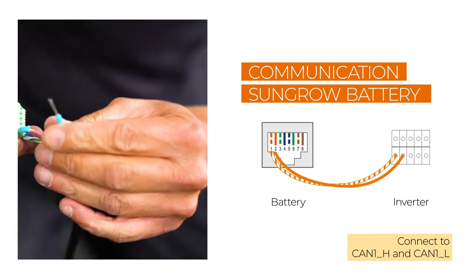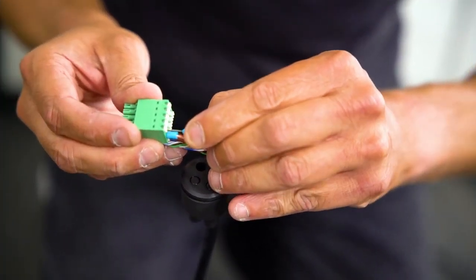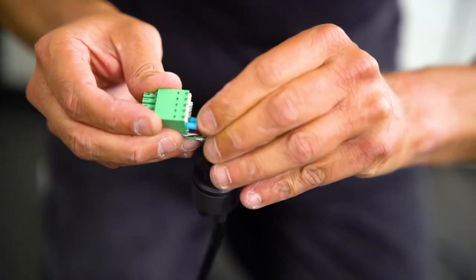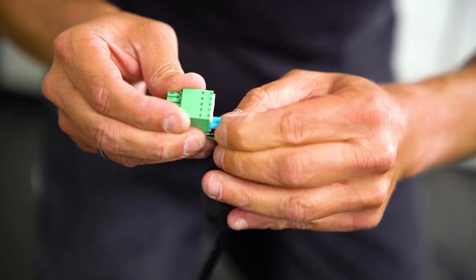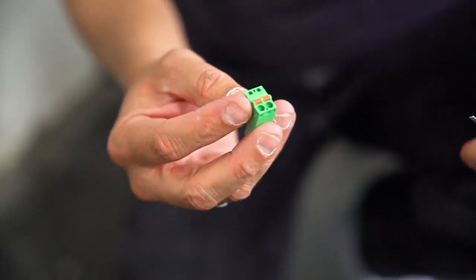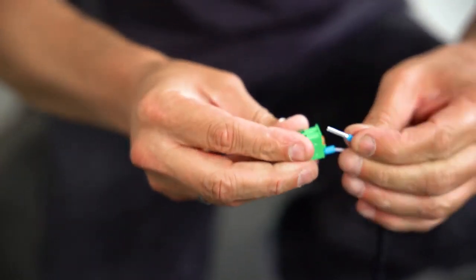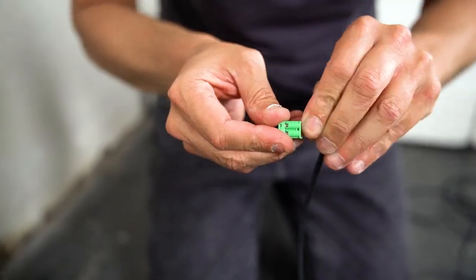You may find a detailed installation video for our battery on our YouTube channel. The BYD battery is connected to the same ports. If you want to add a heat pump to the system, you also have to connect it via the communication port. Connect the cable to the interfaces COM and O.